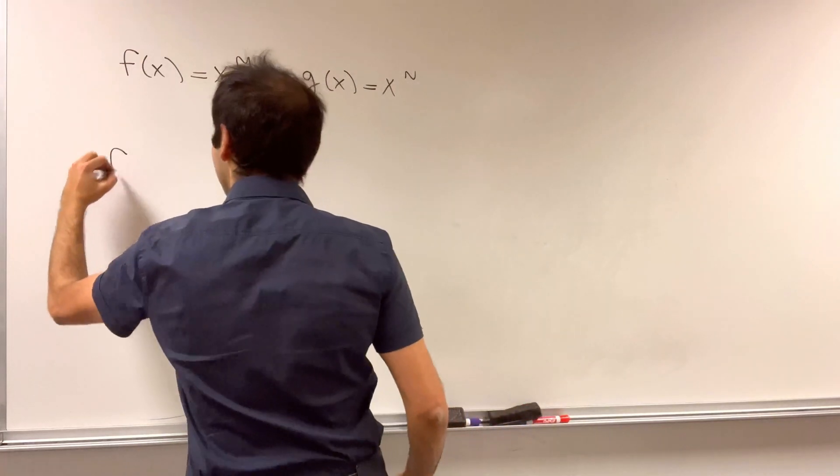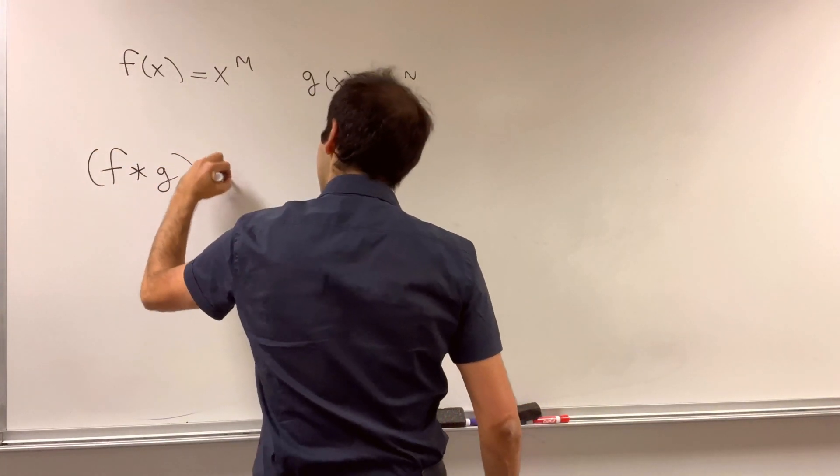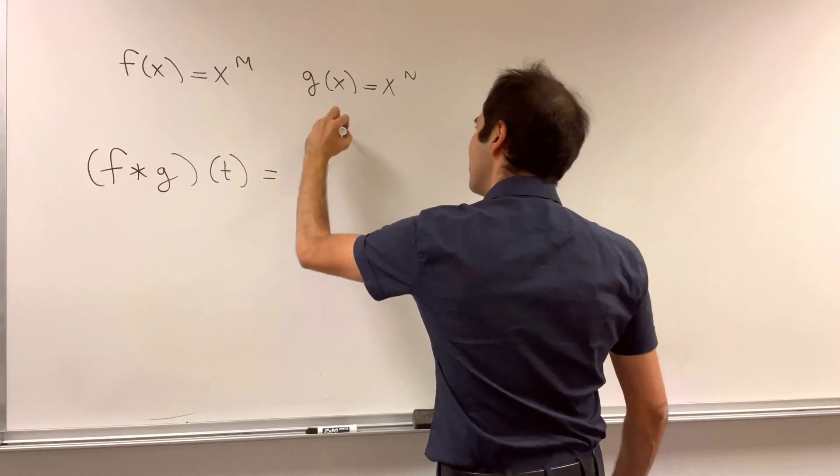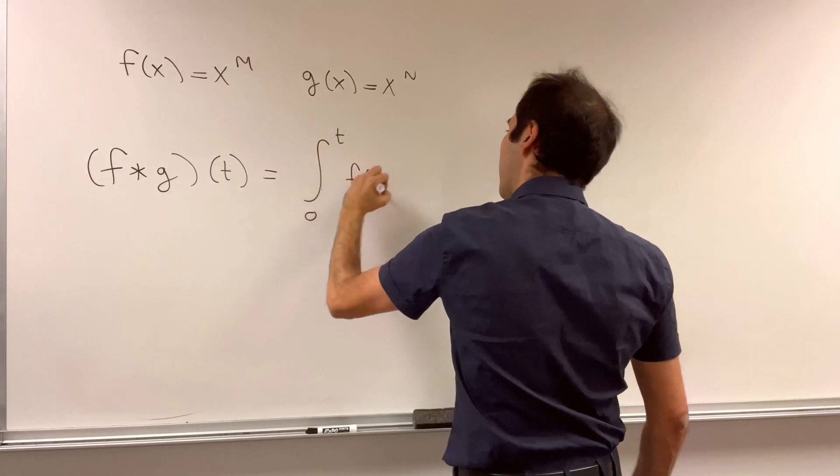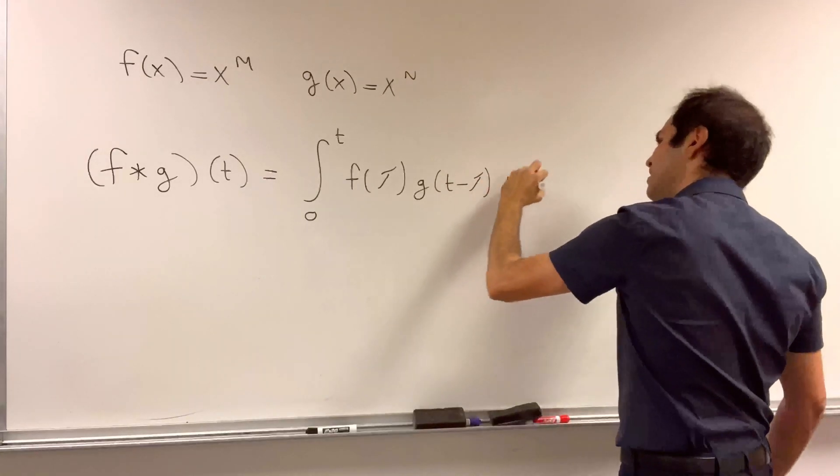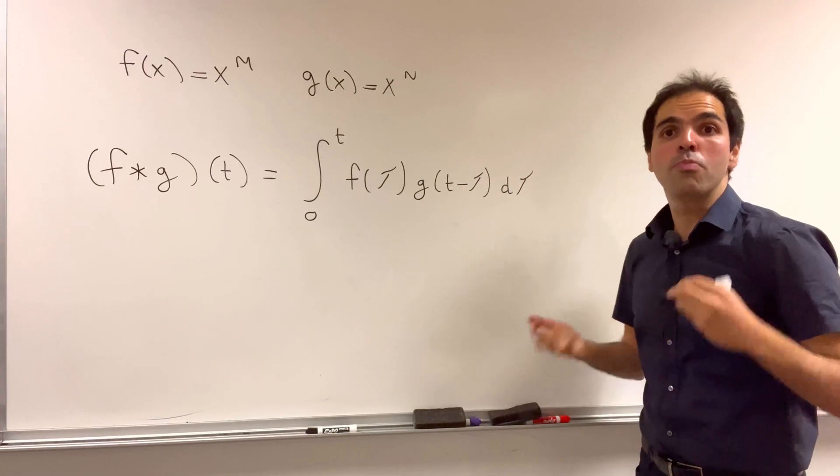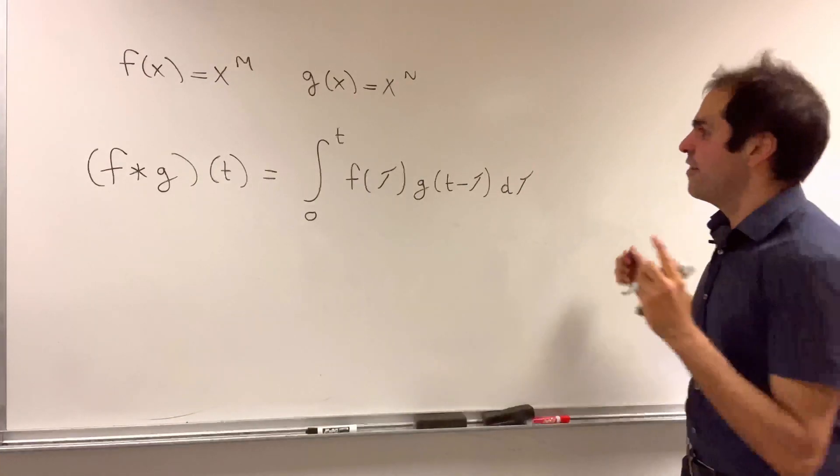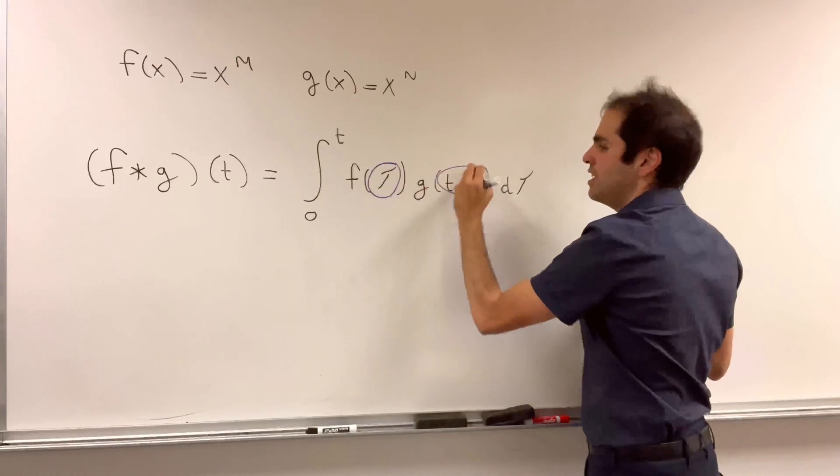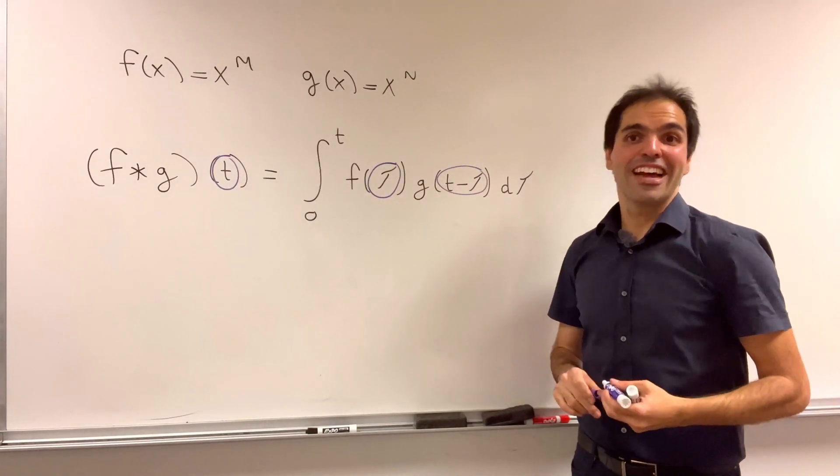All right, so now f convolved with g, I'll use t for reasons that will be apparent in a second, is the integral from 0 to t, f of tau, g of t minus tau, d tau. So that is the notation that the book Boyce de Prima uses. It looks scary, but notice if you add tau and t minus tau, you get t.